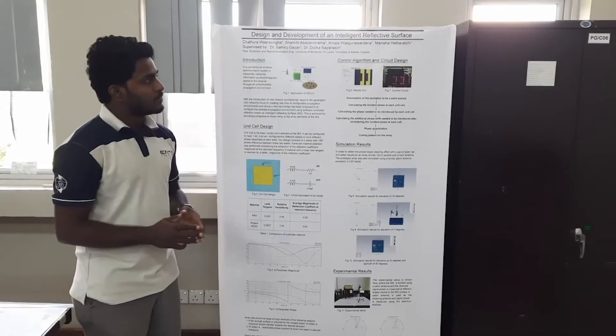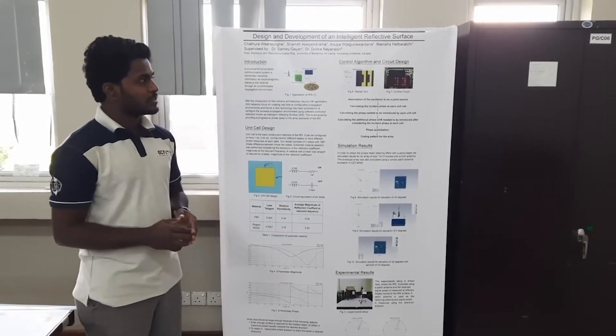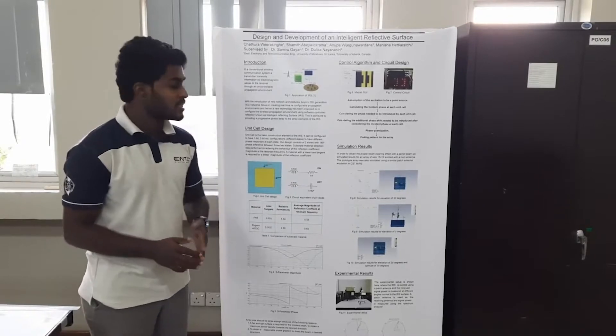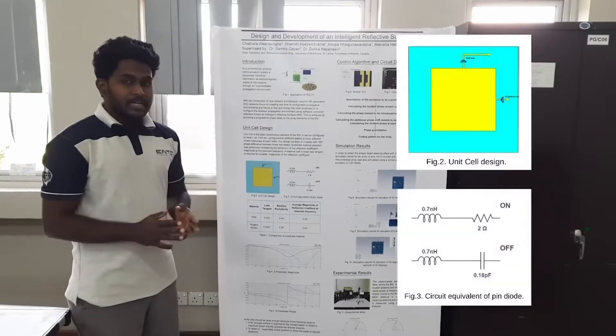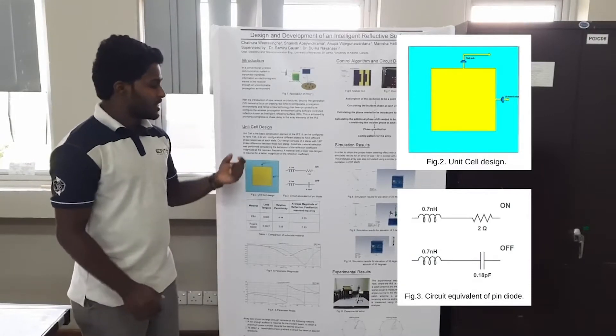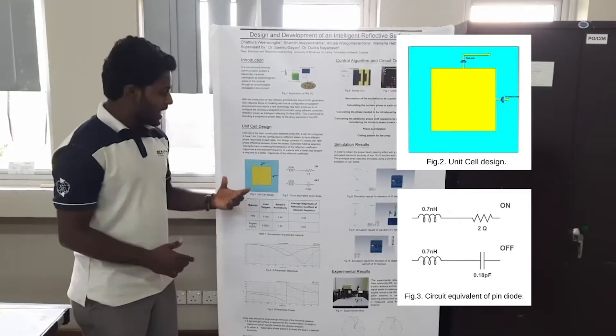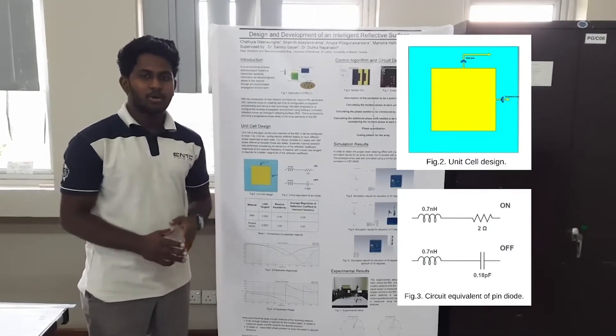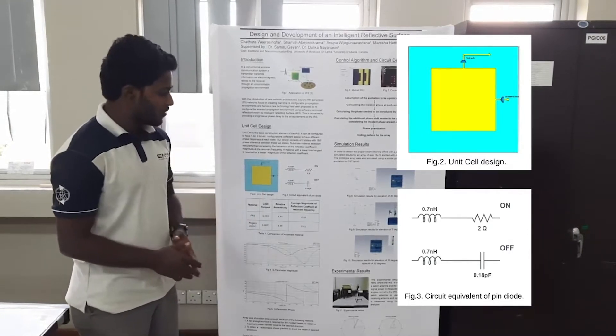First of all, in the design of the prototype of Intelligent Reflective Surface, what we should consider is a basic building block of an Intelligent Reflective Surface which is a unit cell. Typically, a unit cell can be made to have different types of configurations, it can be a 1-bit configuration, 2-bit configuration and likewise. In our project, what we consider is a 1-bit configuration having two modes of operation, on state and off state.